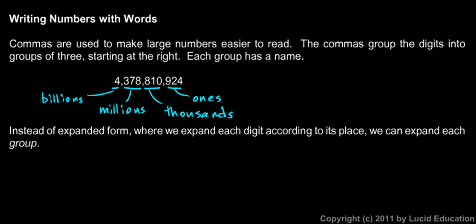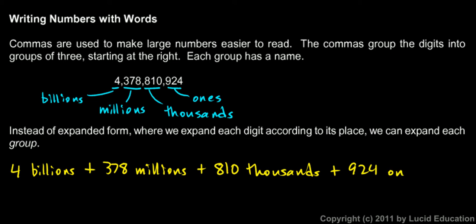Now, instead of expanding each digit, like we did when we were writing a number in expanded form, we can expand each group. And we do that like this. For this number right here, 4,378,810,924, we could do something like we were doing in expanded form. But instead of expanding each digit, we'll expand each group. And we'll write 4 billions plus 378 millions plus 810 thousands plus 924 ones.